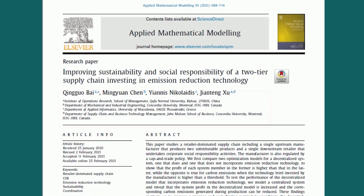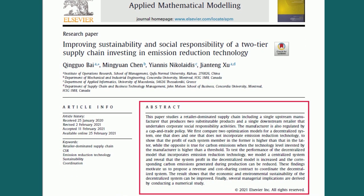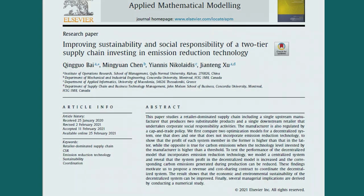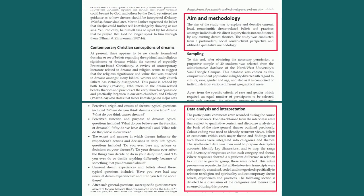Another item to look for on the title page is an abstract or synopsis of the article. This is a great feature that will allow you to briefly read what the article covers and decide whether it really fits your specific topic. Another element that you may find in a scholarly article is methodology and data analysis, where you can evaluate the content of the research.